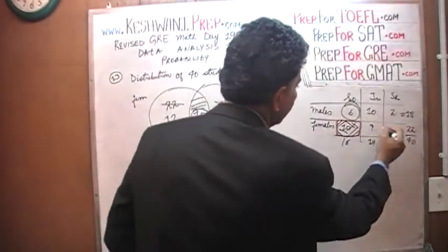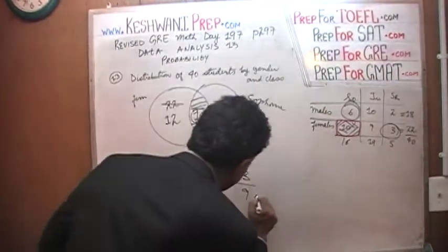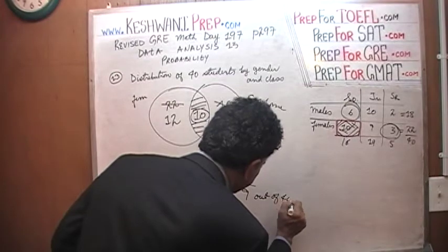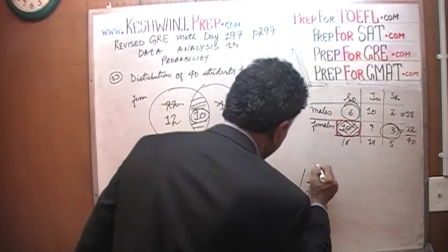There are 9 altogether out of 40. That's it. That's our answer. 9 out of 40 is the answer for part C. And that's all.